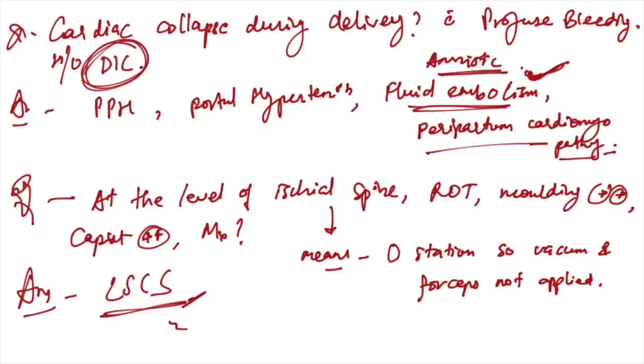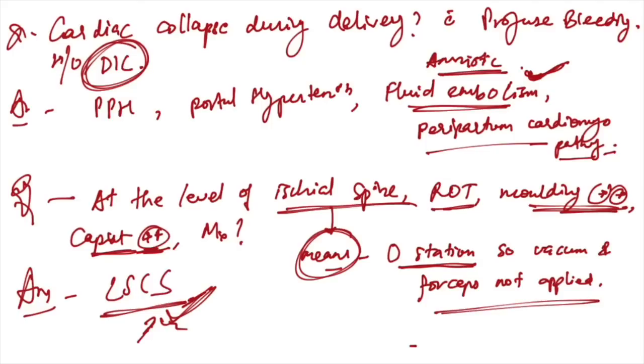At level of ischial spine, RT molding is double plus and caput is double plus. What is the management? No doubt the management is LSCS because when it is on the level of ischial spine, it is zero station, so we can't use vacuum and forceps. Both are contraindicated at zero station.